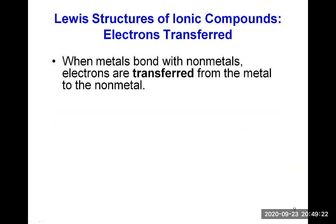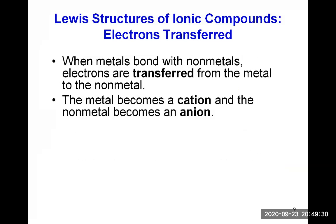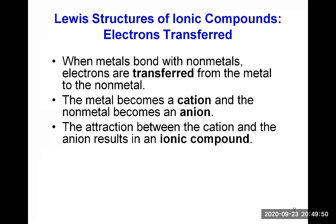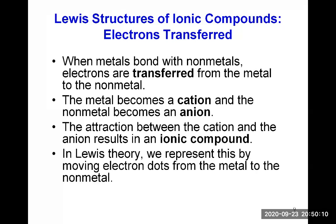So, when metals bond with non-metals, electrons are transferred from the metal to the non-metal. The metal then becomes a cation because it donates its electrons and becomes a positive ion. And the non-metal accepts those electrons and becomes a negative ion, an anion. Then, the positive and negative charges of those cations and anions are attracted. The attraction is such that it creates an ionic compound and that's how they are held together. That's how they are formed. And remember, these are very strong bonds, the ionic bonds. So, in Lewis theory, we can represent this by moving electron dots from the metal to the non-metal.